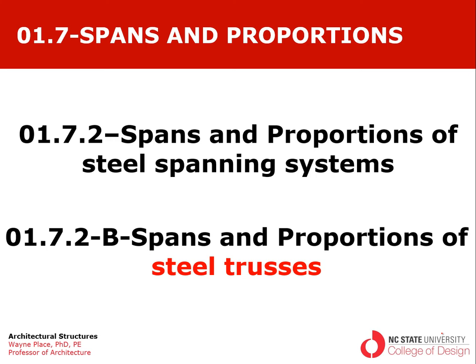Welcome to our ongoing series of videos on spans and proportions of common spanning systems. We're in chapter 1, section 7, point 2, corresponding to steel — this is the second lecture on steel spanning members, designated B, and we're dealing with steel trusses.